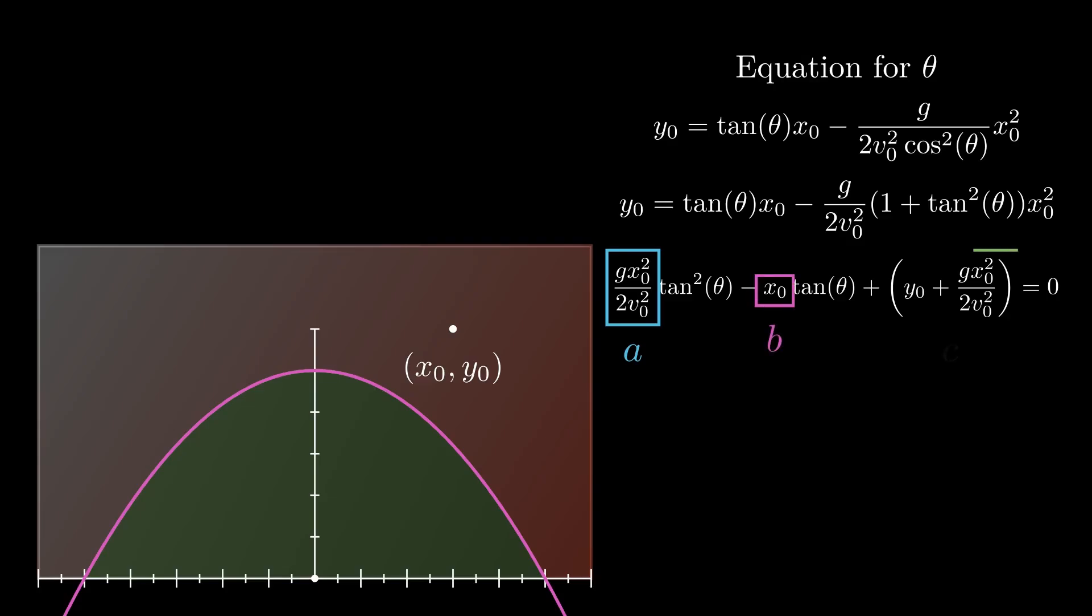Either we write cosine in terms of the tangent and then solve for the tangent, or we write the tangent in terms of the cosine and then solve for the cosine. In this case, it turns out that the first option is much better, because 1 over cosine squared in terms of the tangent is actually pretty neat. And after making this substitution and rewriting the equation in a very suggestive manner, we see that we end up with a quadratic equation not for theta, but for the tangent of theta.